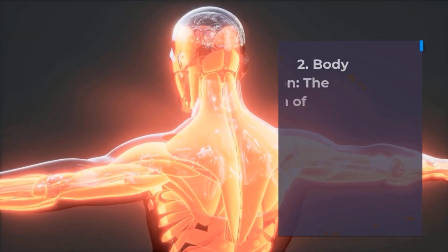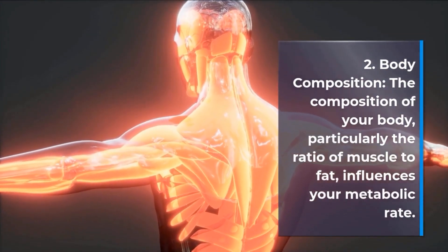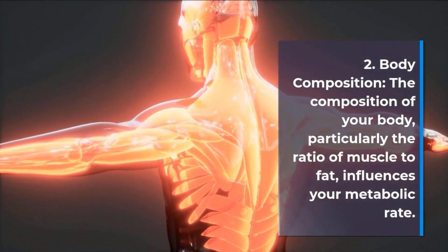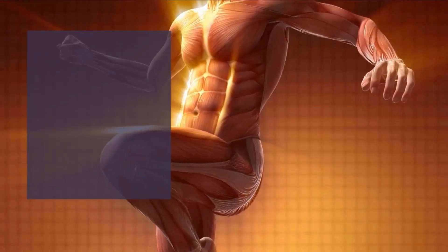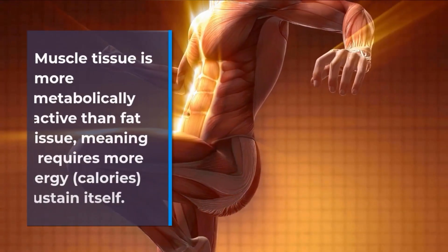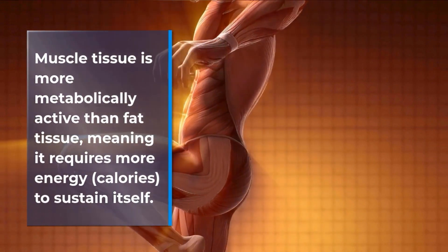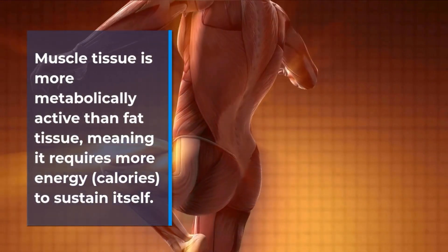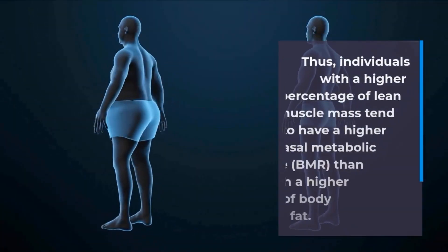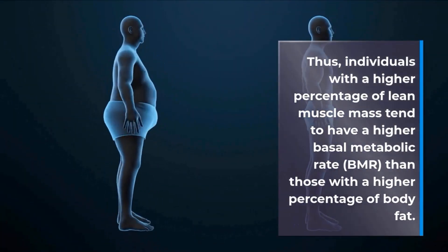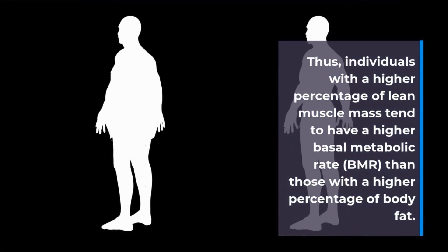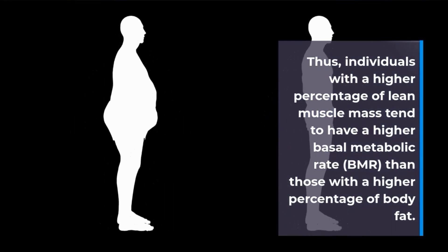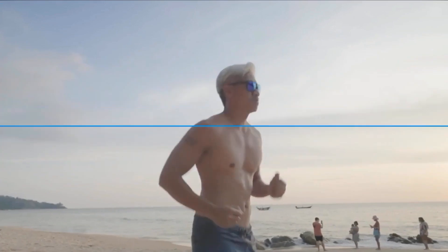2. Body Composition. The composition of your body, particularly the ratio of muscle to fat, influences your metabolic rate. Muscle tissue is more metabolically active than fat tissue, meaning it requires more energy — calories — to sustain itself. Thus, individuals with a higher percentage of lean muscle mass tend to have a higher basal metabolic rate (BMR) than those with a higher percentage of body fat.